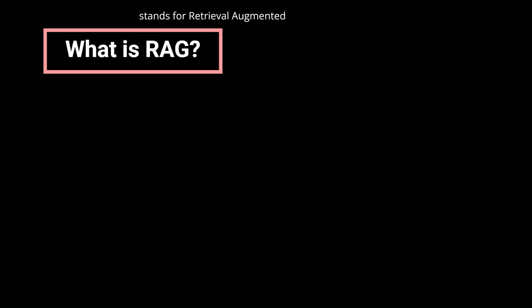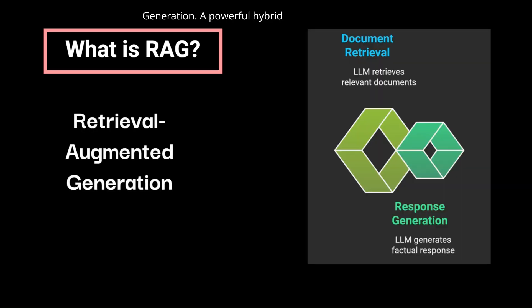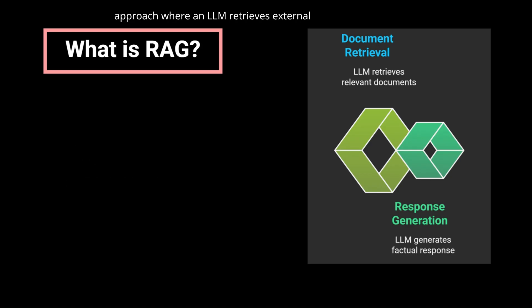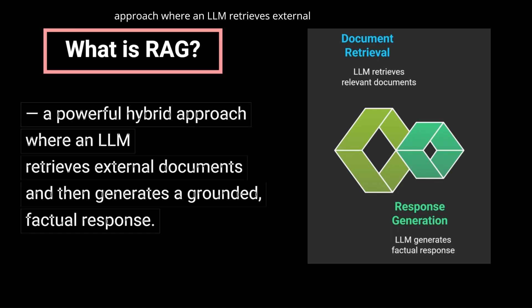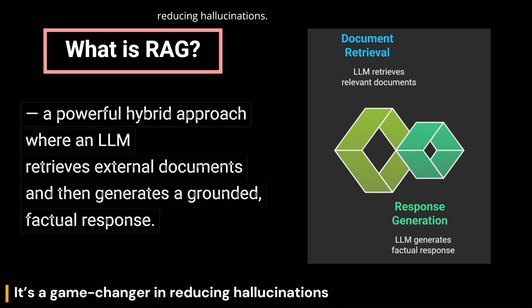What is RAG? RAG stands for Retrieval Augmented Generation, a powerful hybrid approach where an LLM retrieves external documents and then generates a grounded, factual response. It's a game-changer in reducing hallucinations.